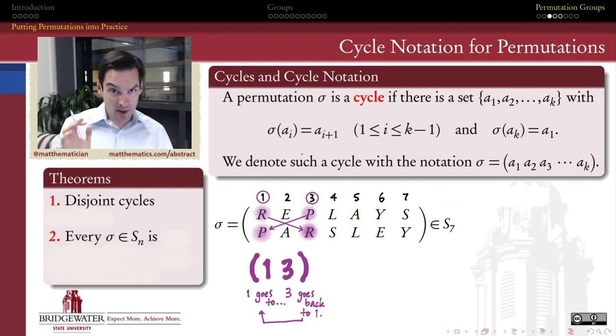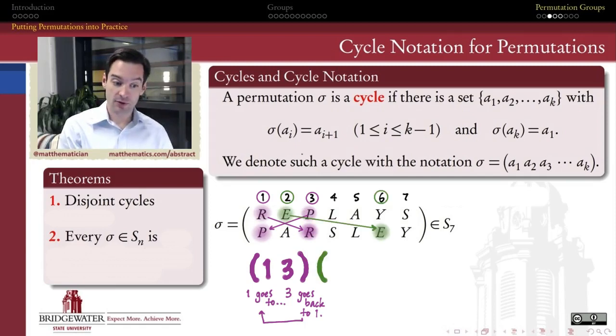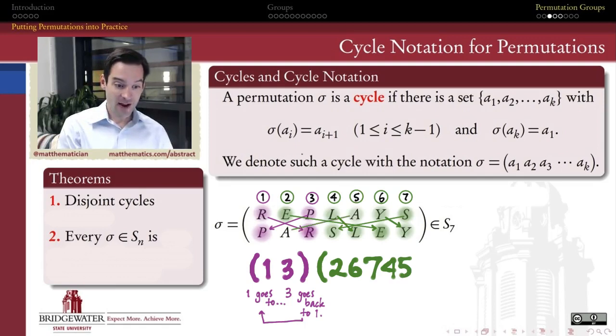So that means that I'm going to need a separate description for what happens to 2, 4, 5, 6, and 7. Let's take a look at those. Where does my symbol from position 2 end up? Where's my E? 2 goes to 6. Then where does 6 go in continuing my cycle? The Y. 6 goes to 7. Where does 7 go? 7 goes back to 4. Where does 4 go? 4 goes back to 5. Where does 5 go? 5 goes back to 2, and now I'm finally back home.